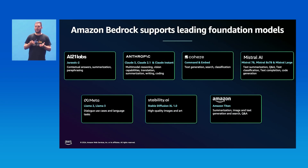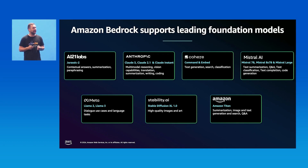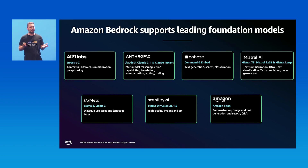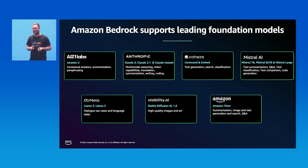Luckily you start with a great selection of different models — cutting-edge foundation models from leading providers you can choose and plug in. Among them: AI21 Labs, Anthropic, Cohere, Mistral, Meta, Stability, and our own Amazon models. With that broad selection, you need to do a first sub-selection to get started. How can you select a subset of these models to look at more closely? Which characteristics help you do that? Roy, please introduce us to them.